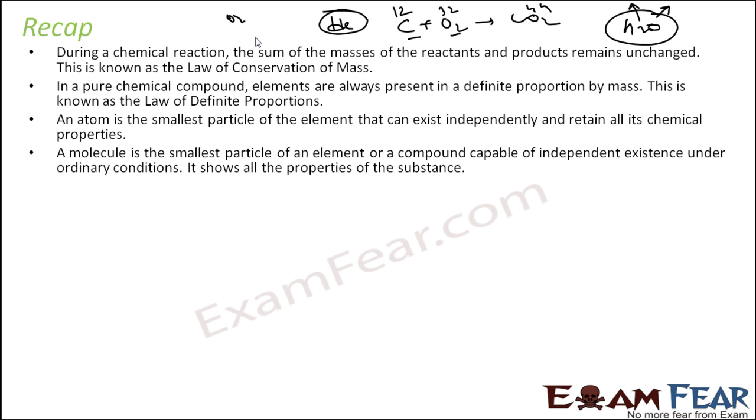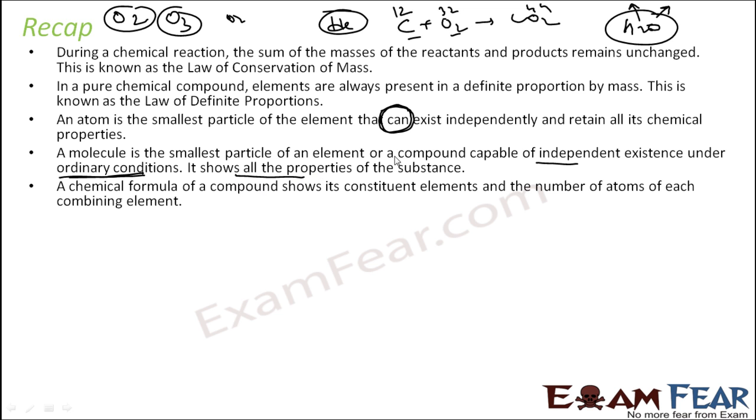A molecule is the smallest particle of an element that is capable of existing independently under all conditions and shows all the chemical properties. Please note there is 'can' here and 'under all conditions'. Oxygen can exist, but oxygen typically exists in O2 or O3 form. This is molecule form. You can actually break a molecule to atoms and that will exist independently under some conditions, but this molecule exists under ordinary conditions.